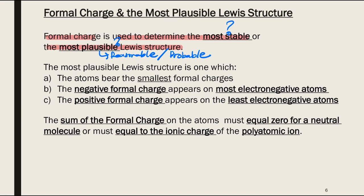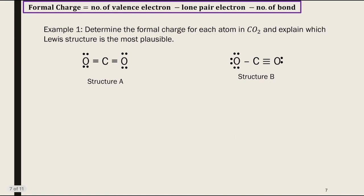How can we determine whether a Lewis structure is the most plausible? First, from the calculation of formal charge, the atoms in the molecule should bear the smallest number of formal charge. Second, negative formal charge appears on the most electronegative atoms. Third, positive formal charge appears on the least electronegative atoms. Finally, the sum of the formal charges must equal 0 for a neutral molecule, or must equal the ionic charge of a polyatomic ion.